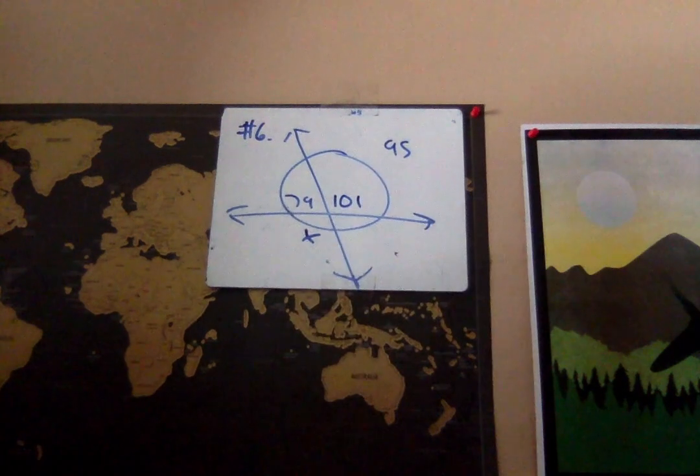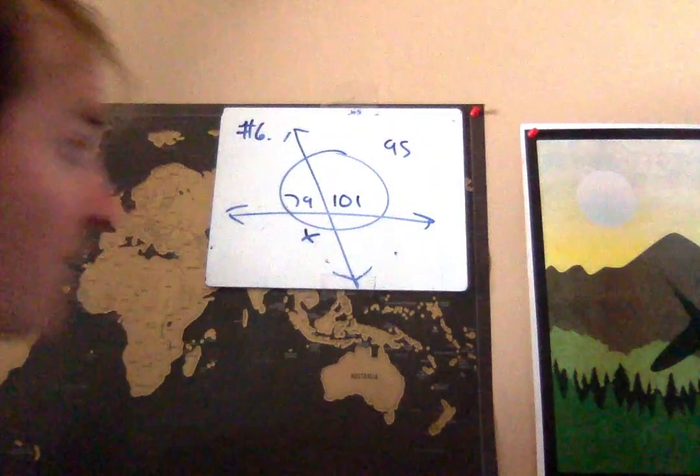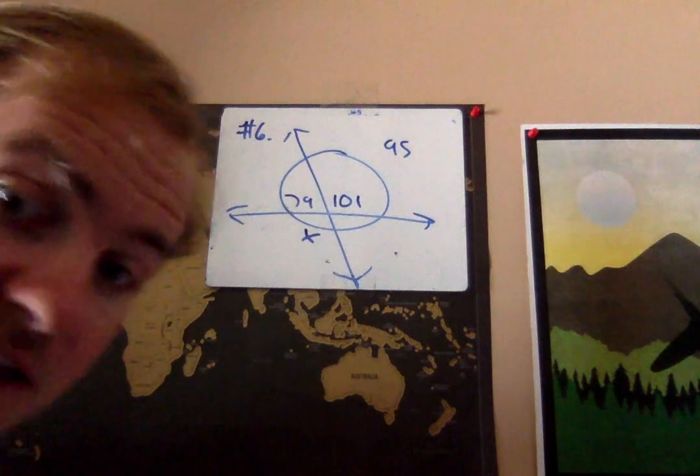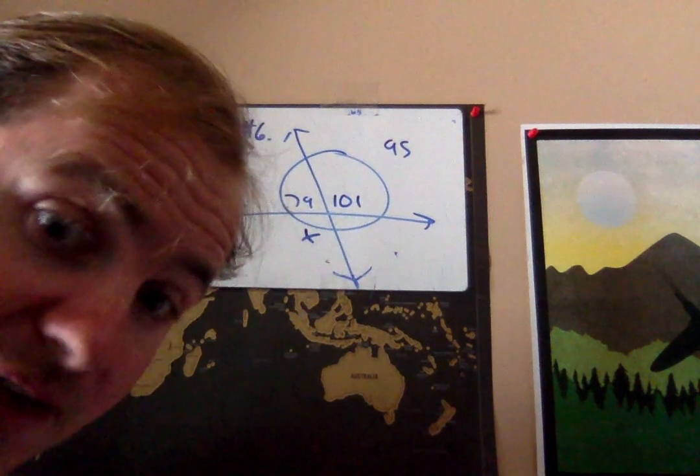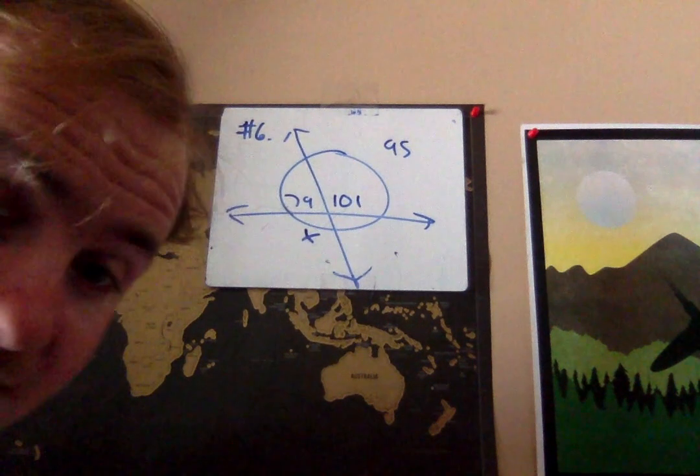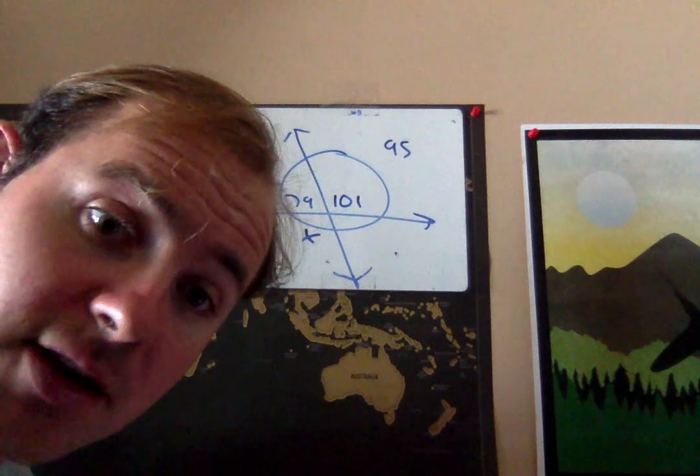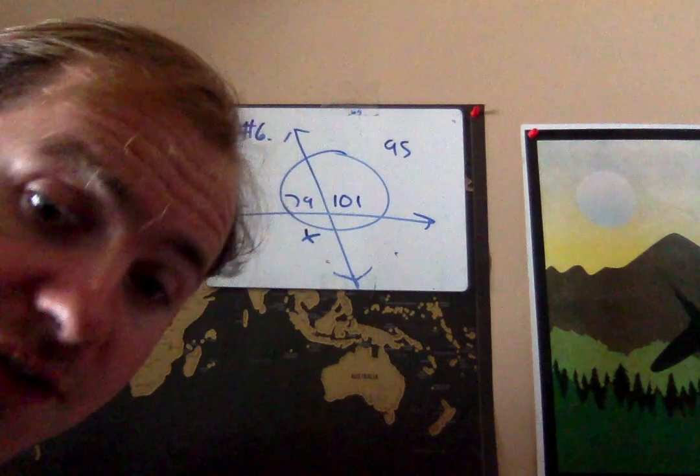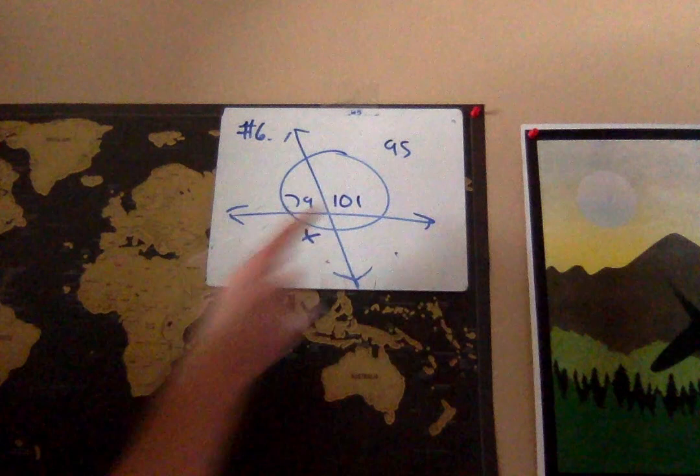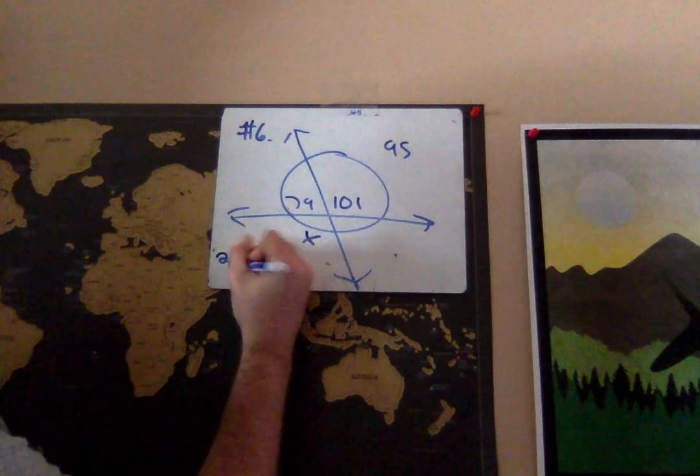180. So this would have to be 101 by doing 180 minus 79. Now we're ready to do exactly the same thing we did in the previous problems. We just say it takes two of the one in the middle to make the sum of the arcs together.